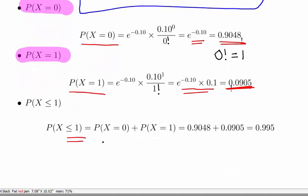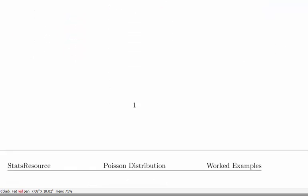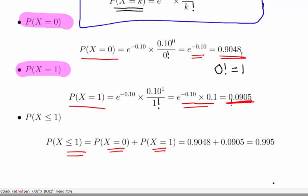What we have to do is add the two values together. The probability of X less than or equal to 1 equals the probability of X equals 0 plus the probability of X equals 1, which is 0.9048 plus 0.0905, which equals 0.995, or 99.5 percent.